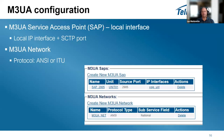The M3UA service access point (SAP) is your local interface — how you receive and send traffic to the M3UA network. You define your local IP interface and your SCTP port. The default port for M3UA is 2905; if unsure, use this. You can use any SCTP port in the configuration. This is the port from which you will send and receive traffic.